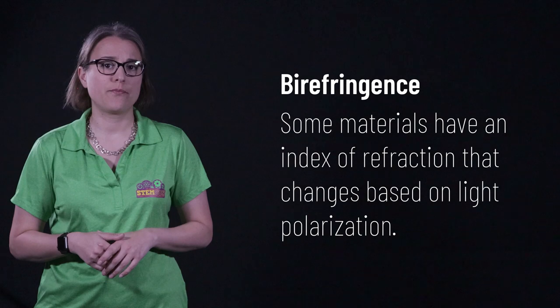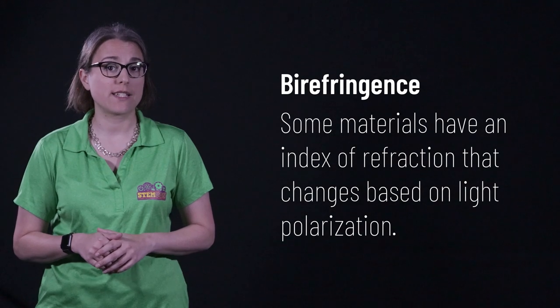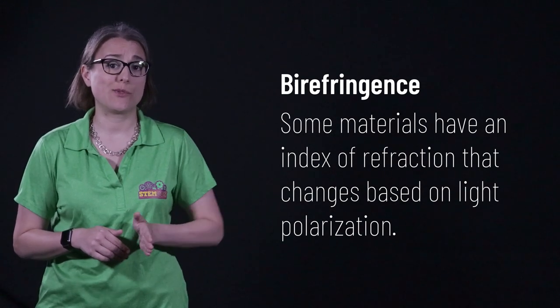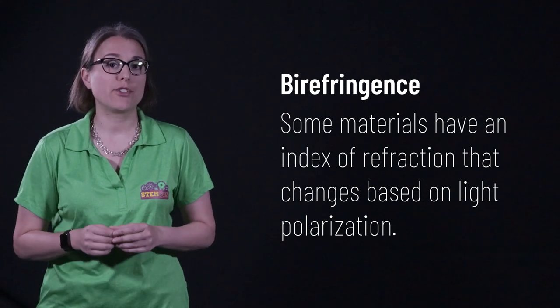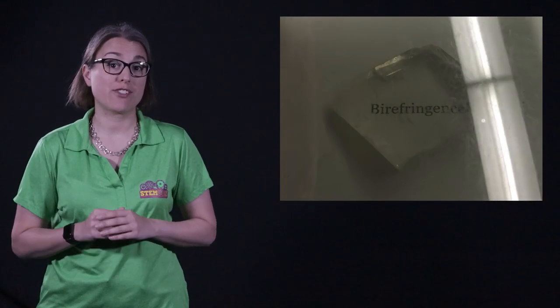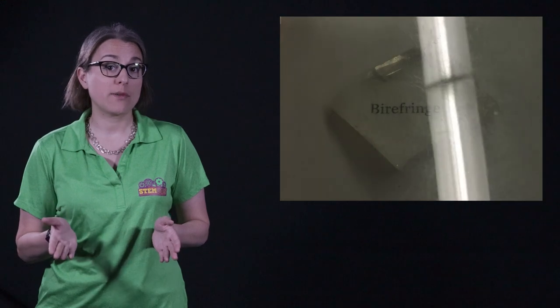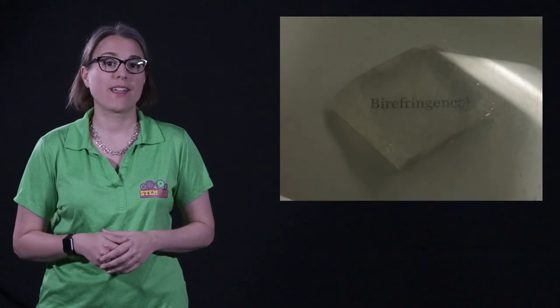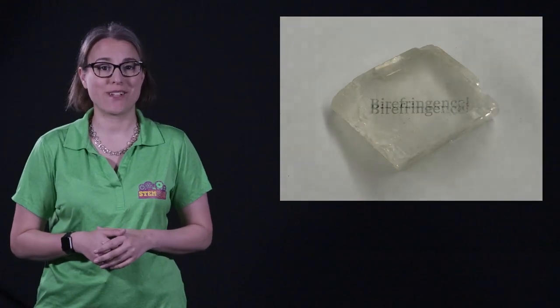One last thing about polarization. Some objects have an index of refraction that changes based on the polarization of light. This means that light in one polarization will bend more than light at the other cross polarization. These objects are known as birefringent. A birefringent crystal placed over words shows this property by creating a double image. One of the images is polarized in one orientation and the other image is polarized in the opposite orientation. I can take a polarizing filter and rotate it and see how one image is blocked, then the other, depending on the orientation of the filter. Thanks for taking the time to learn about light waves. Until next time, stay well.